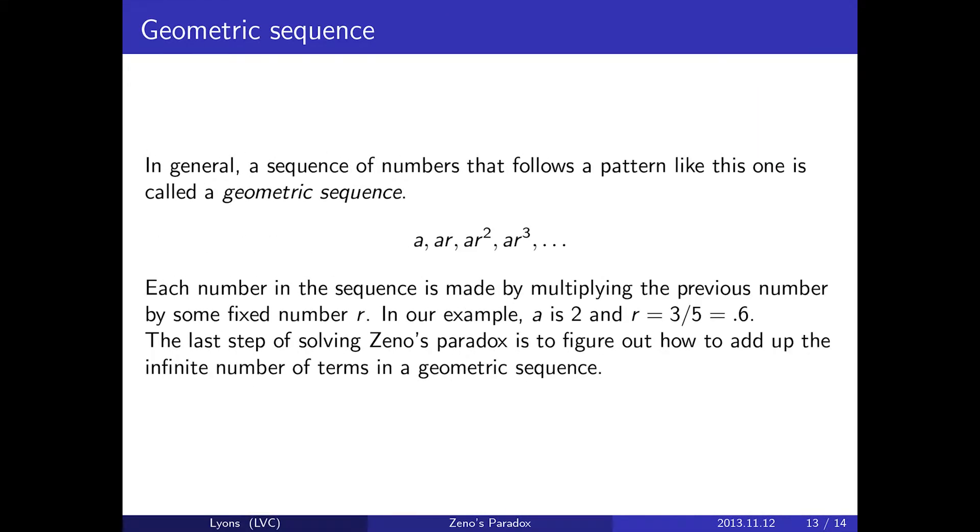In general, a sequence of numbers that follows a pattern like this one is called a geometric sequence. It starts with a number A and then multiplies each number to get the next by some fixed number R. So in our example, A is 2 and R is 3 fifths or 0.6. The last step of solving Zeno's paradox is to figure out how to add up the infinite number of terms in a geometric sequence.